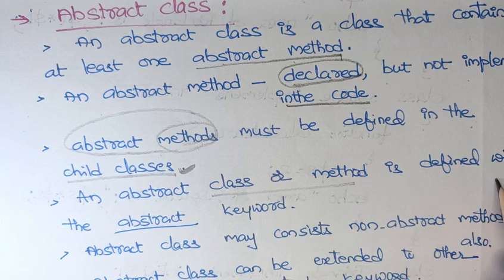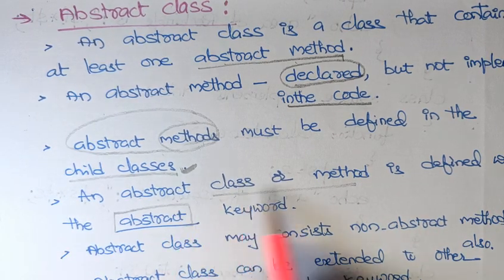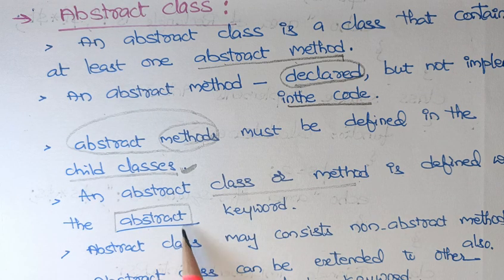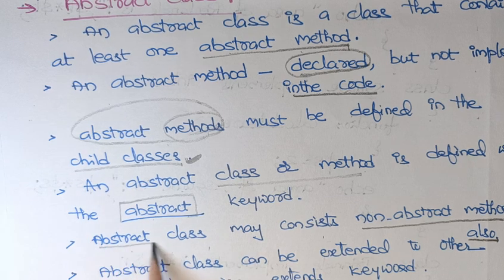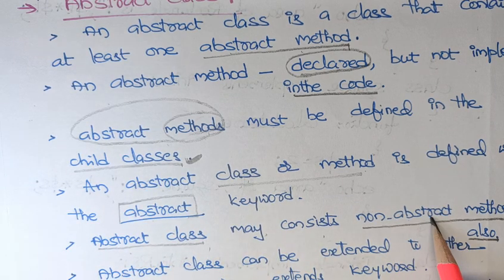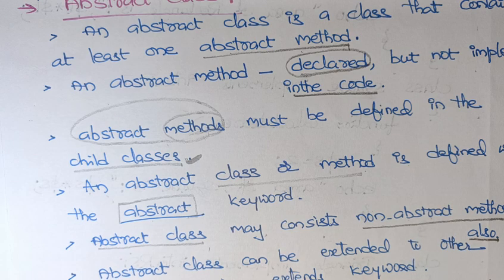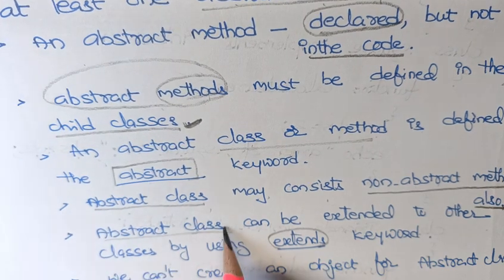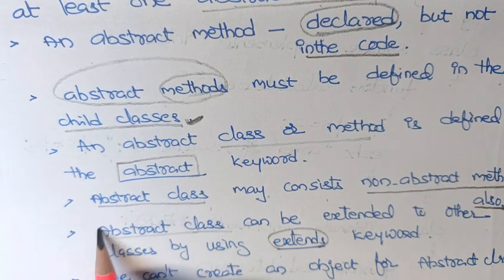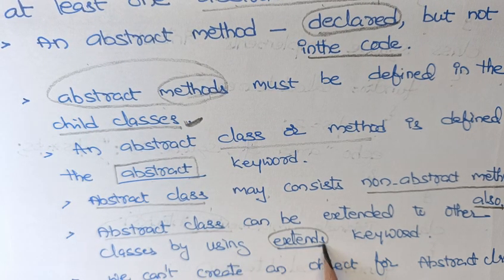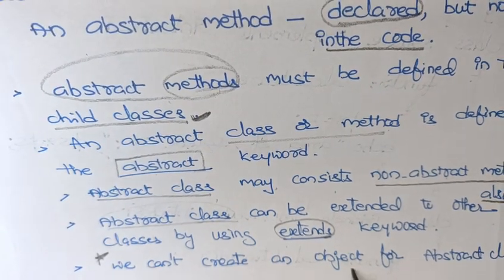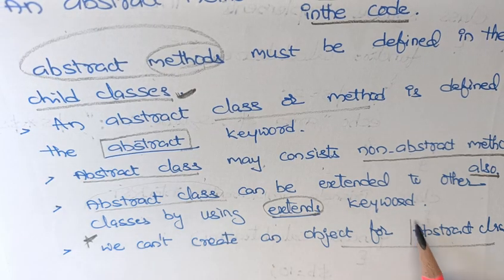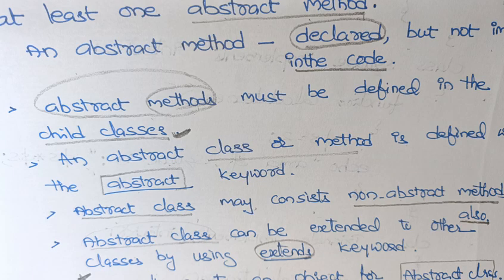An abstract class and its abstract methods are defined with the abstract keyword. An abstract class may also consist of non-abstract methods — you can write any non-abstract methods as well. An abstract class can be extended to other classes using the extends keyword. Importantly, we cannot create an object for an abstract class.